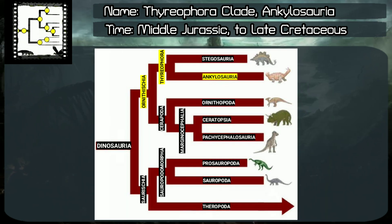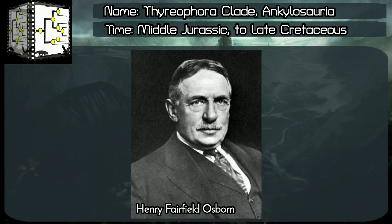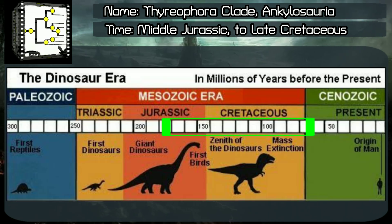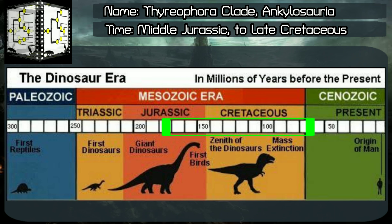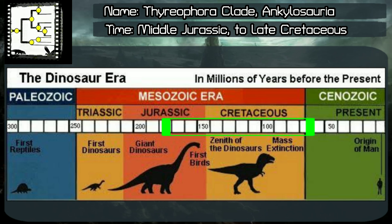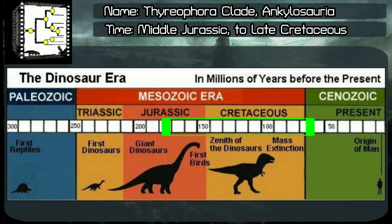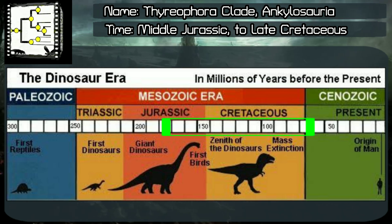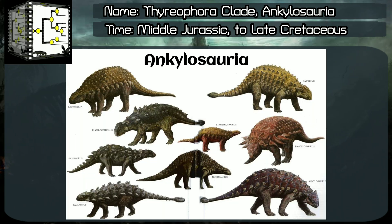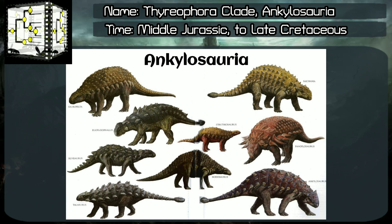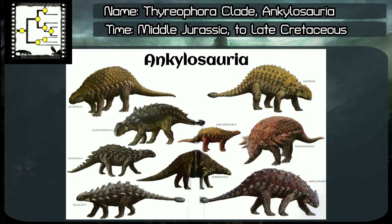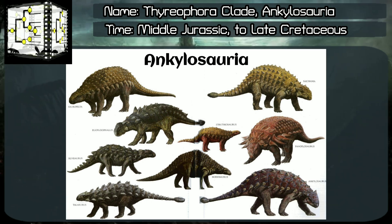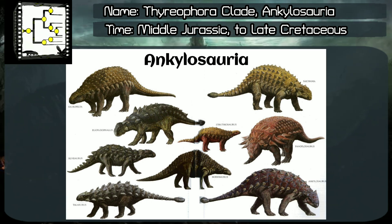Ankylosauria suborder, classified by Henry Fairfield Osborn, year 1923. Time range: Phanerozoic Aeon, Mesozoic Era, middle Jurassic to late Cretaceous periods, something around 170 to 66 million years ago. From Greek, Ankylosauria means armored lizards. They are quadrupedal herbivores known for their bony armor covering their backs. Some of them have club tails for self-defense.